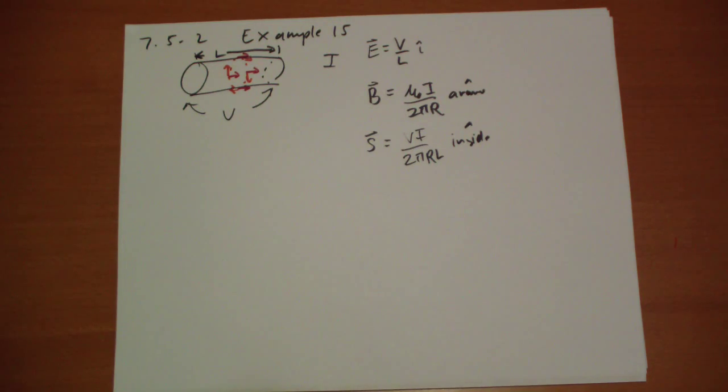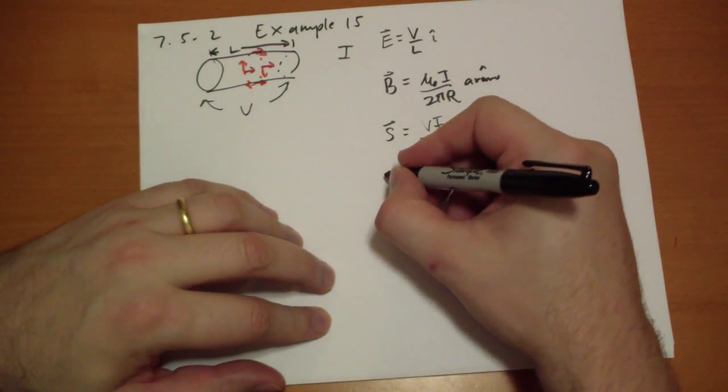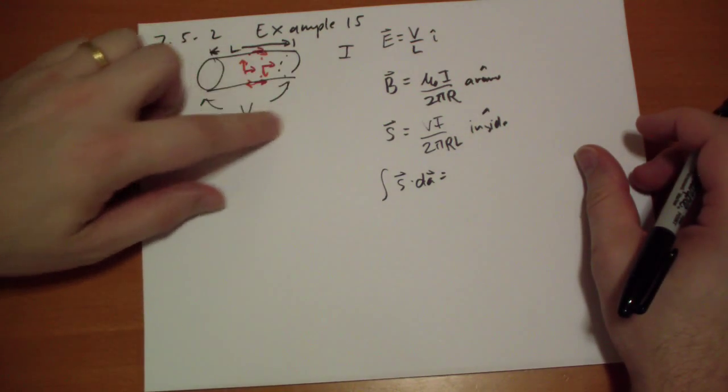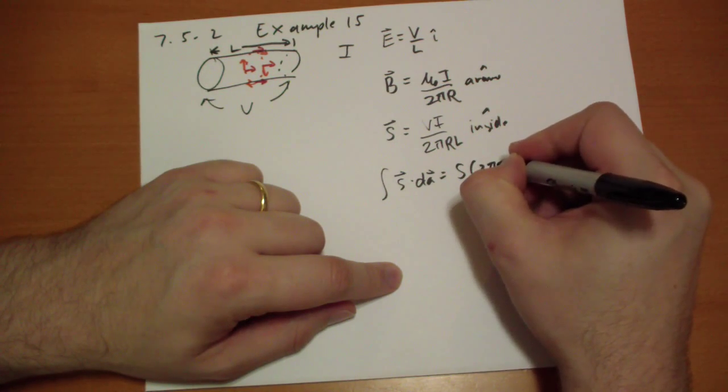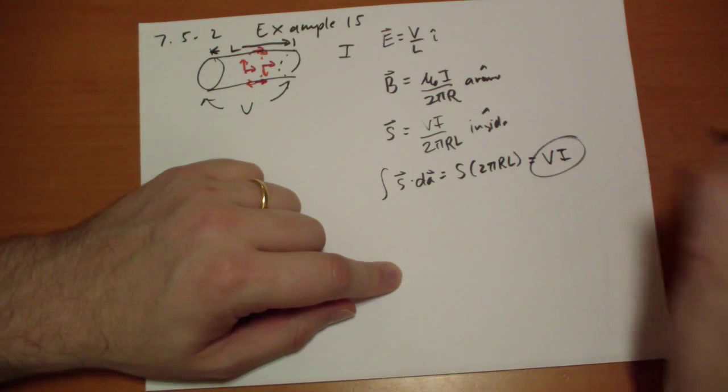So the total flux of energy passing through, S dot dA, will give us the change in work. So how much area is there across the surface? Well, that's 2 pi r L.